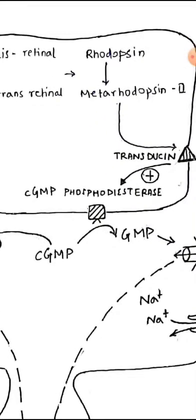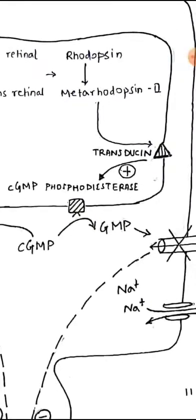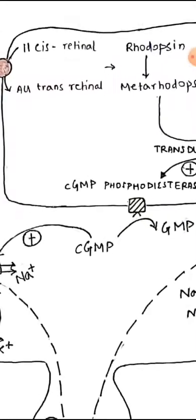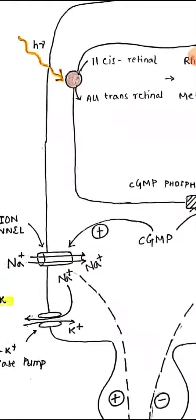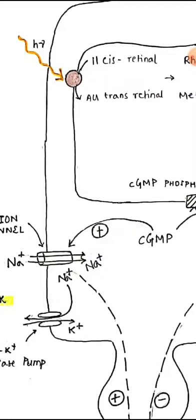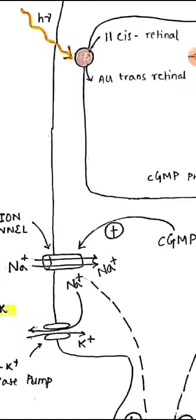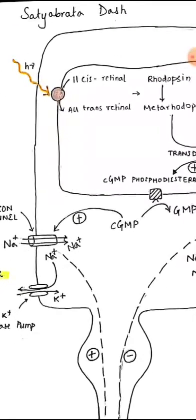This cGMP phosphodiesterase is responsible for breaking down cyclic GMP to GMP. Now this cyclic GMP is quite important because in normal conditions, this cyclic GMP goes and binds to the sodium channels in the dark and keeps them in an open state, because of which continuous influx of sodium ion is present.